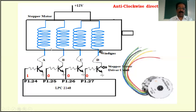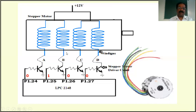After providing delay, energize winding B by making P1.25 high. Now this transistor is on and the others are off. The current starts flowing through this particular winding, creating a magnetic flux around the coil. Therefore it creates torque — a twisting force — and it's going to rotate the motor by another 1.8 degrees. Then provide delay.